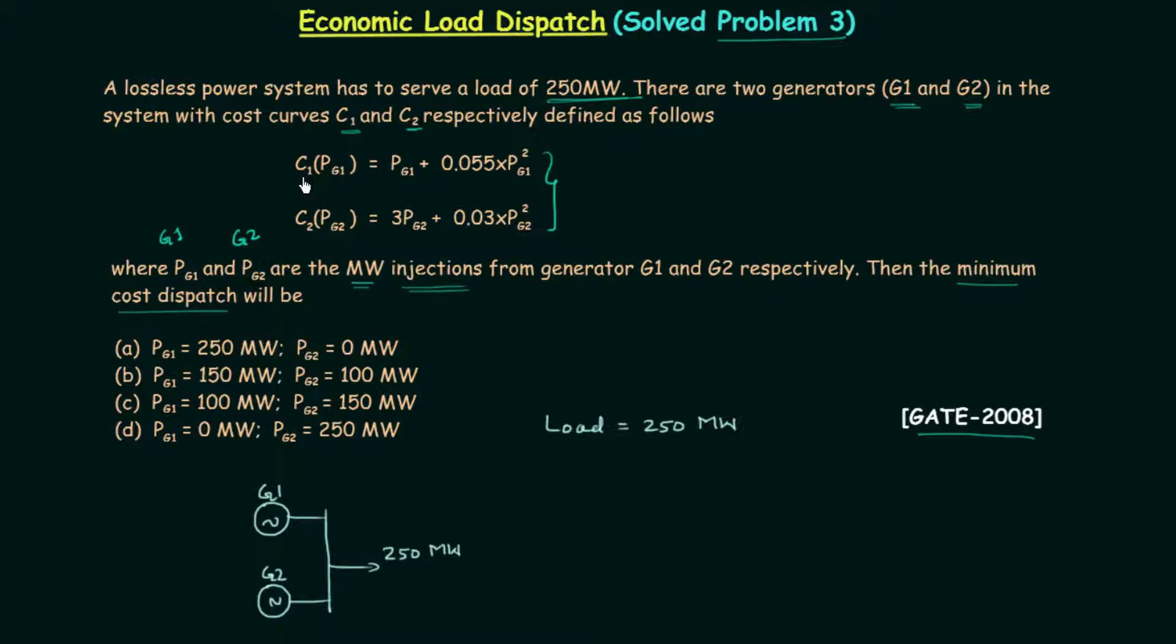You can see how C1 and C2 are defined. C1 is the function of PG1 and C2 is the function of PG2. C1 equals PG1 plus 0.055 times PG1 squared, and C2 is 3 times PG2, the power produced by the second generator, plus 0.03 times PG2 squared.